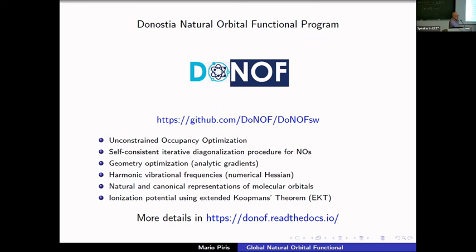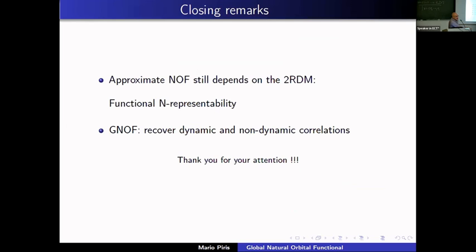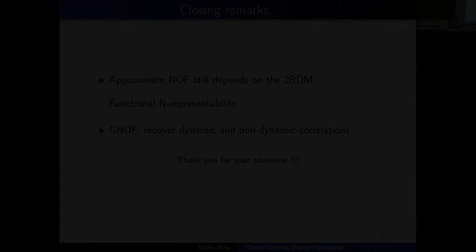All these calculations have been done with DoNOF, which is available on GitHub. You can download it, optimize geometries, and do many things with this natural orbital functional approximation. The two main messages to take home: first, for approximate functionals, dependence on the two-RDM is still present and N-representability must be imposed to obtain physically meaningful results; second, GNOF recovers static and dynamic correlation in a more balanced way. Thank you.